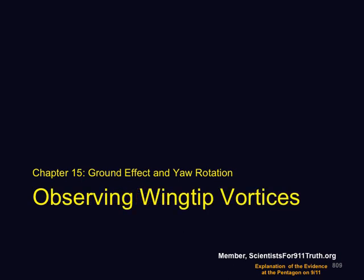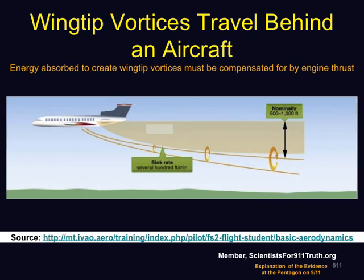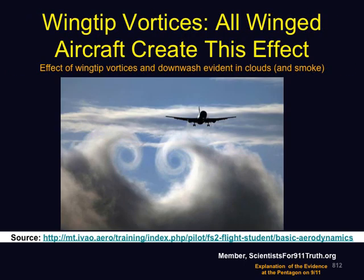In this section, we're going to be observing some wingtip vortices. Wingtip vortices extend behind an airborne aircraft. The wings deflect air downward. This downward-moving air moves both downward and outward, causing rolling masses of air called wingtip vortices, seen here as cones. It takes energy to create these vortices. Ultimately, the energy derives from the engines of the plane, which reduces the engine's thrust.